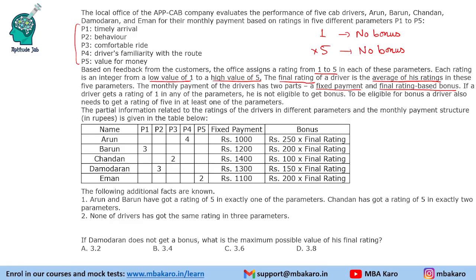The partial information is given in a table along with the monthly payment structure. We are also given that Arun and Barun have got a rating of 5 in exactly one of the parameters — which parameter we do not know. Chandan has got a rating of 5 in 2 parameters. And none of the drivers has got the same rating in 3 parameters.